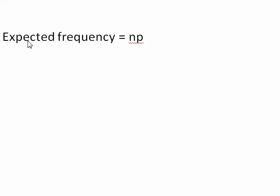We have the formula that the expected frequency is equal to n times p. Up in the problem, they gave us what they thought the percentages were for the place where the weddings were held, and the sample size was 250.